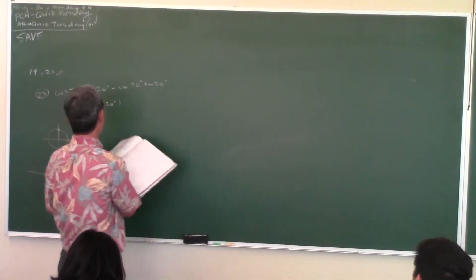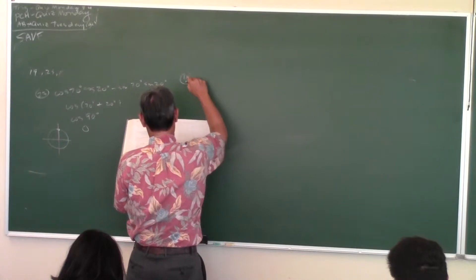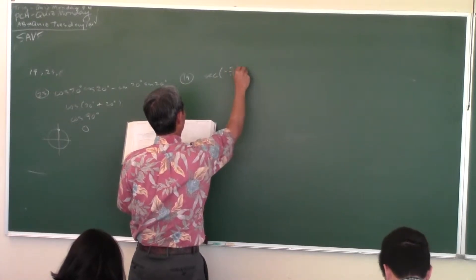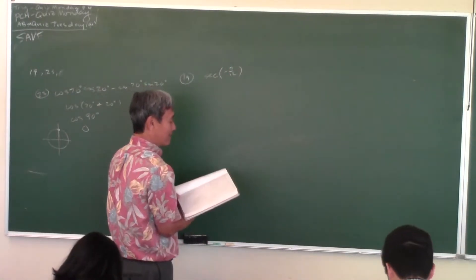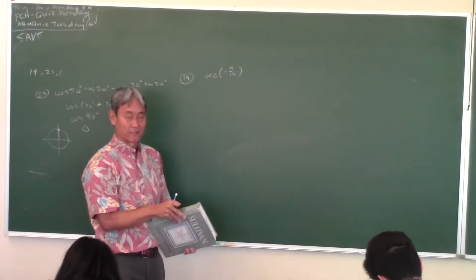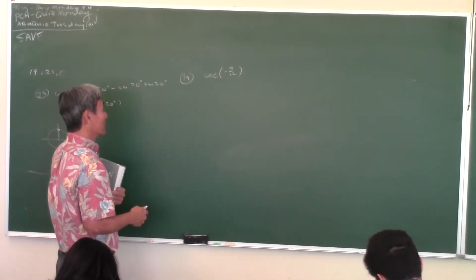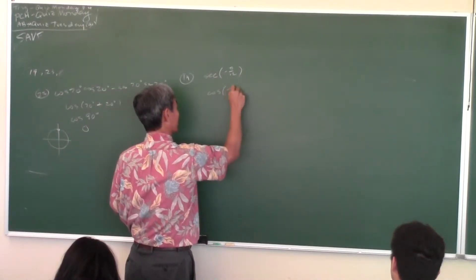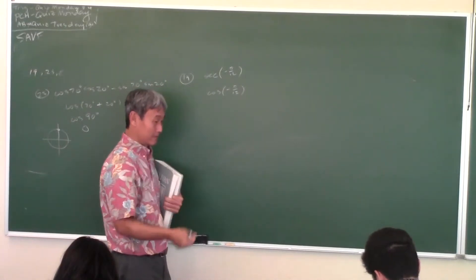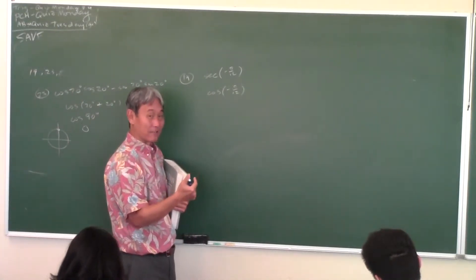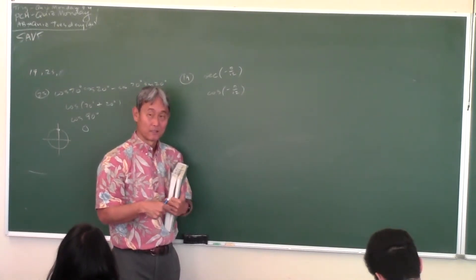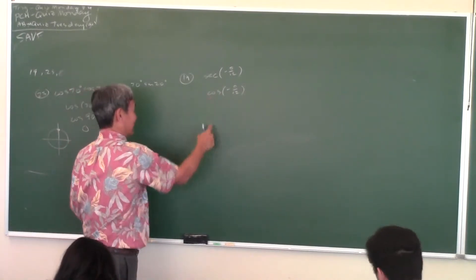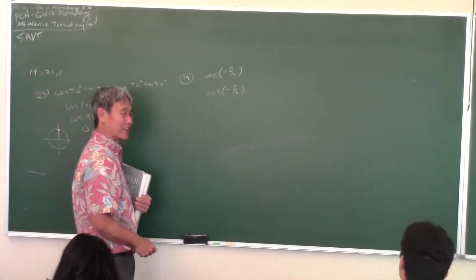Okay, number 19 — this is the other kind of problem. Secant of negative π over 12. On the quiz I'm probably only going to give you sine, cosine, or tangent — I will not give you secant. To figure out the secant of negative π over 12, you compute the cosine of negative π over 12 and then reciprocate it, because secant is the reciprocal of cosine. So on the quiz I'll just do cosine. Now, what is cosine of negative π over 12?